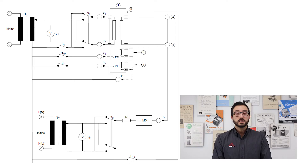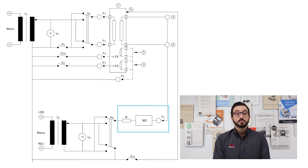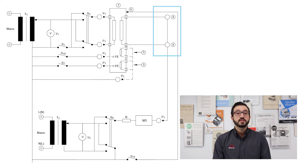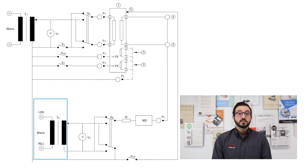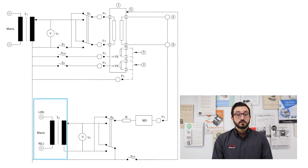Let's now take a look at how the mains and applied part leakage current test is set up and performed according to the IEC 60601-1 medical device standard. The measuring device circuit simulating the human body impedance is placed between the applied parts, labeled as number 4 on the diagram, and the line of a secondary transformer labeled T2.